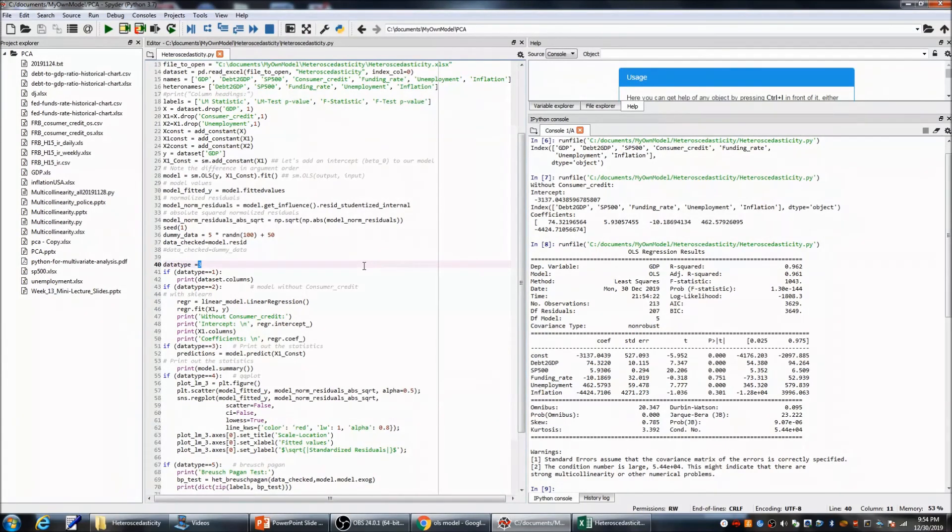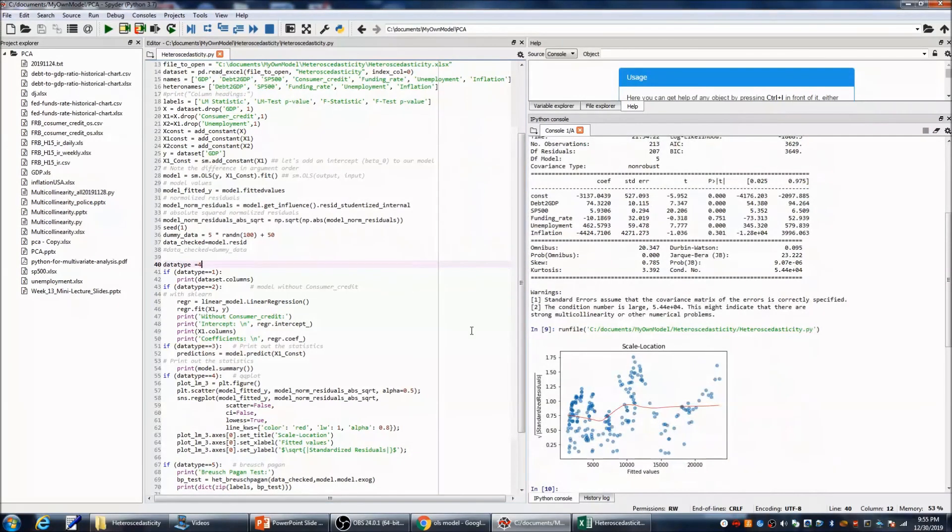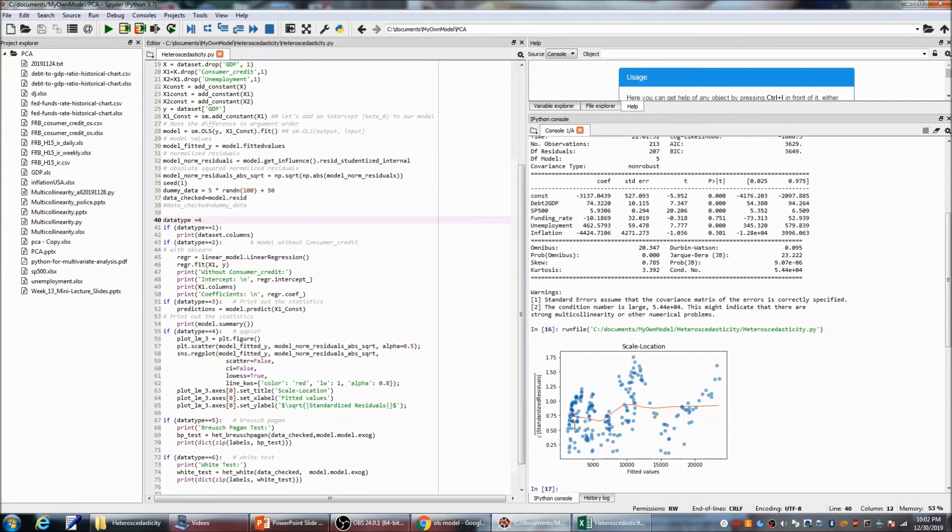Let's check the QQ plot first. On the QQ plot, we can see this line is not a horizontal straight line. So, we might have issue of heteroscedasticity for this model.